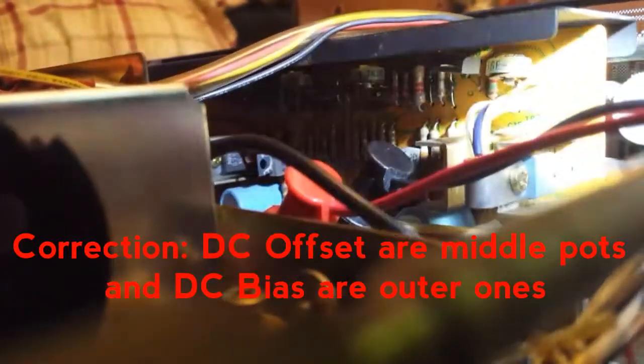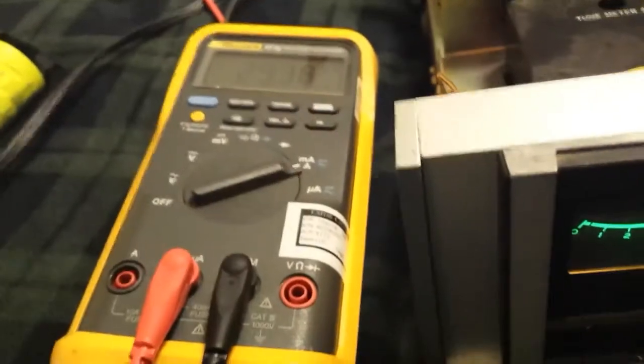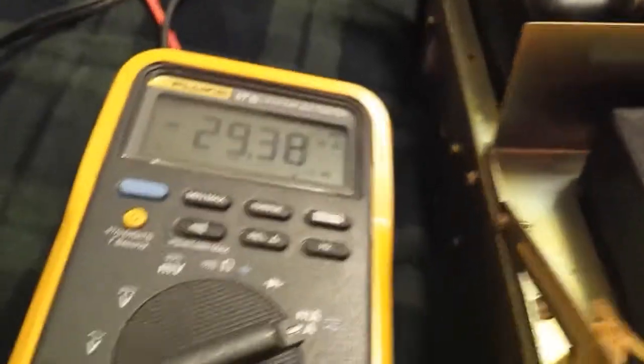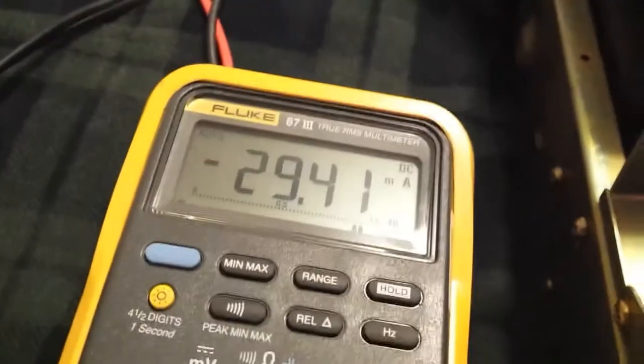See that white thing? You see the two in the middle? Those are the bias ones. The two on the ends are the DC offset. I'm happy with this, got around 29 milliamps per side. I'm just going to try to get this one a little bit closer to 30. Things are warming up.